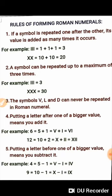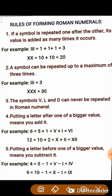We have to learn these rules for forming Roman numerals. The first rule says: if a symbol is repeated one after the other, its value is added as many times as it occurs. For example, 3 can be written as 1 plus 1 plus 1. Since 1 is represented by I, it is written as III. Another example: 20 can be written as 10 plus 10, and since 10 is represented by X, 20 is written as XX.